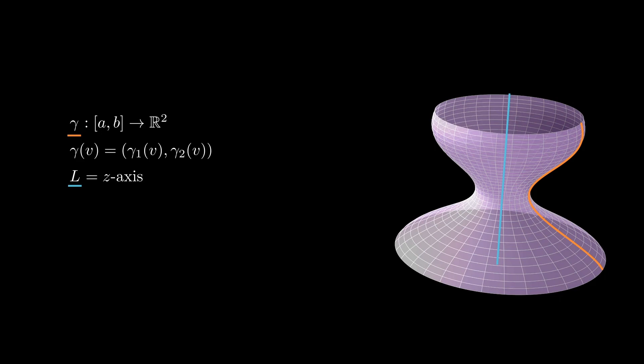If gamma is parameterized by v, and u goes from 0 to 2π, this surface can be covered by the chart φ given by γ₁(v)cos(u), γ₁(v)sin(u), and γ₂(v). This chart covers the entire surface except gamma. If we want to cover the entire surface, we would need a second chart with u ranging in an interval containing zero.